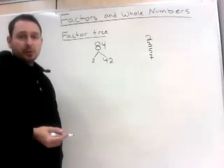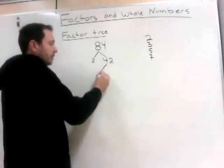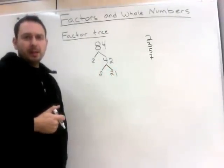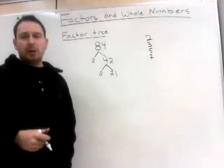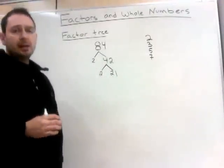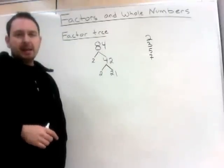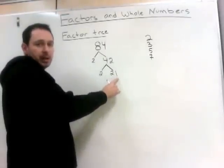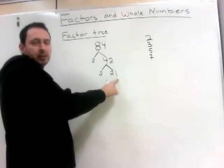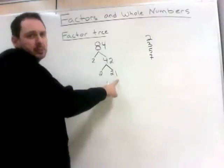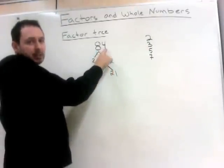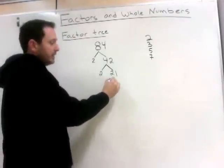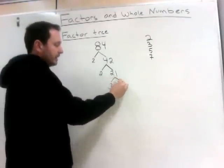42 is also even, so it is divisible by 2: 2 times 21. Now we're no longer divisible by 2 because 21 is not an even number. However, you can tell a number is divisible by 3 if its digits add up to something that divides by 3. For example, 21: 2 plus 1 is 3, which means it's divisible by 3. You can also go back to the top — 84: 8 plus 4 is 12, and 12 divides by 3. So 21 divided by 3 is 3 times 7.